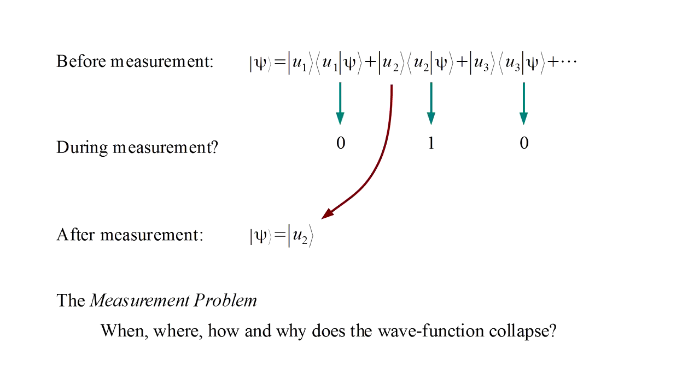The so-called measurement problem of quantum mechanics is concerned with the question: when, where, how, and why does the wave function collapse? It worked people up in the 1920s and continues to do so now, almost a hundred years later. In spite of the spectacular practical success of quantum mechanics, it should therefore not be surprising that people have often questioned and pushed back against quantum weirdness.